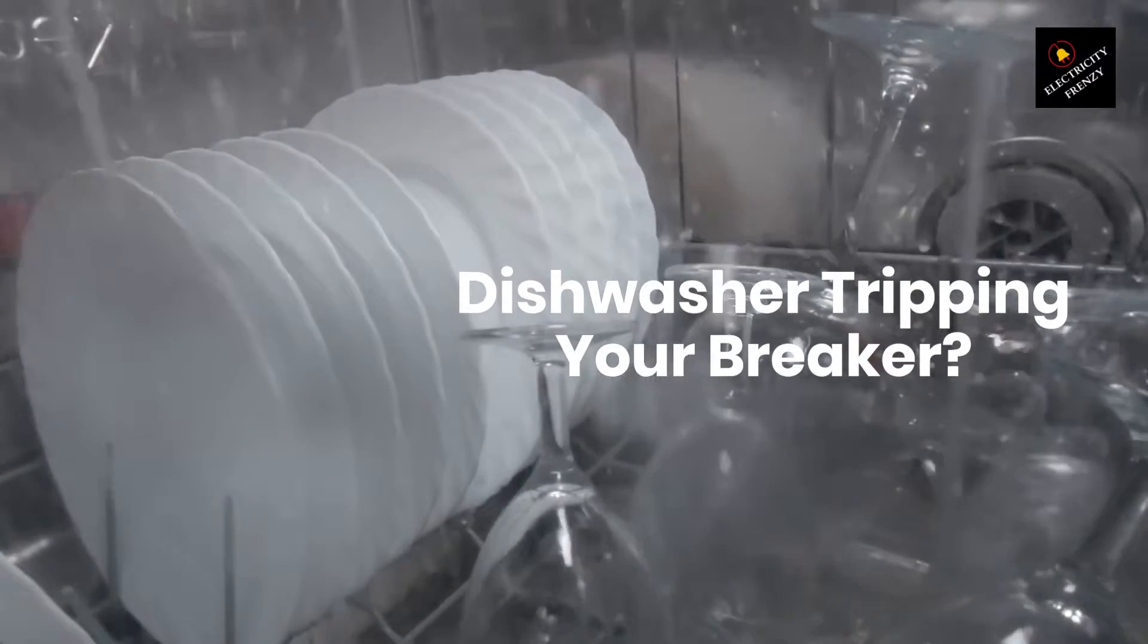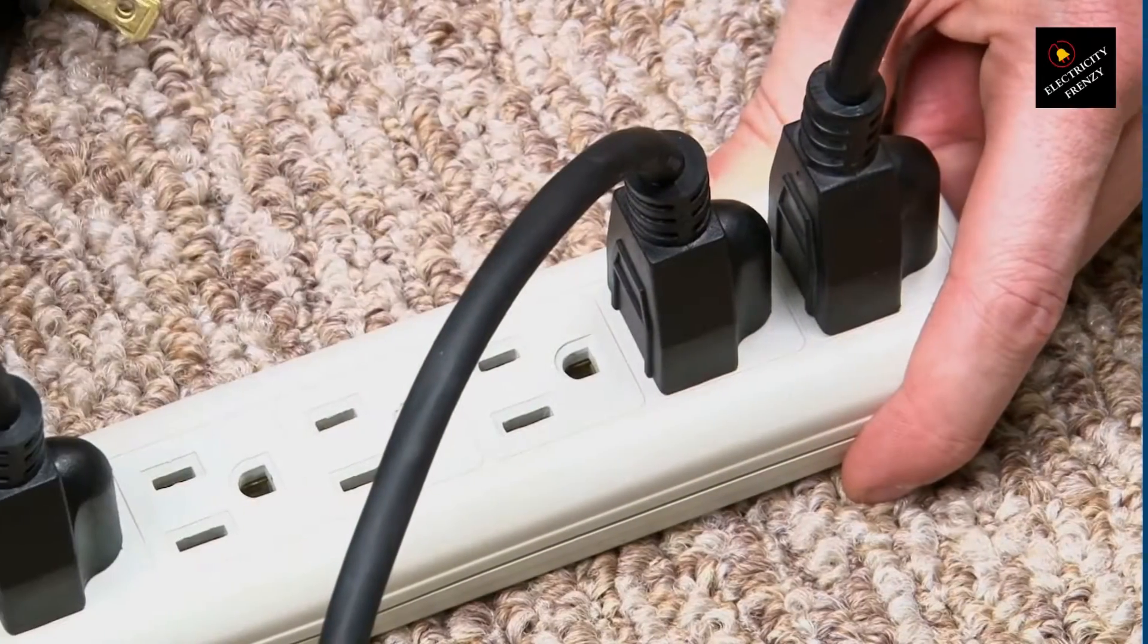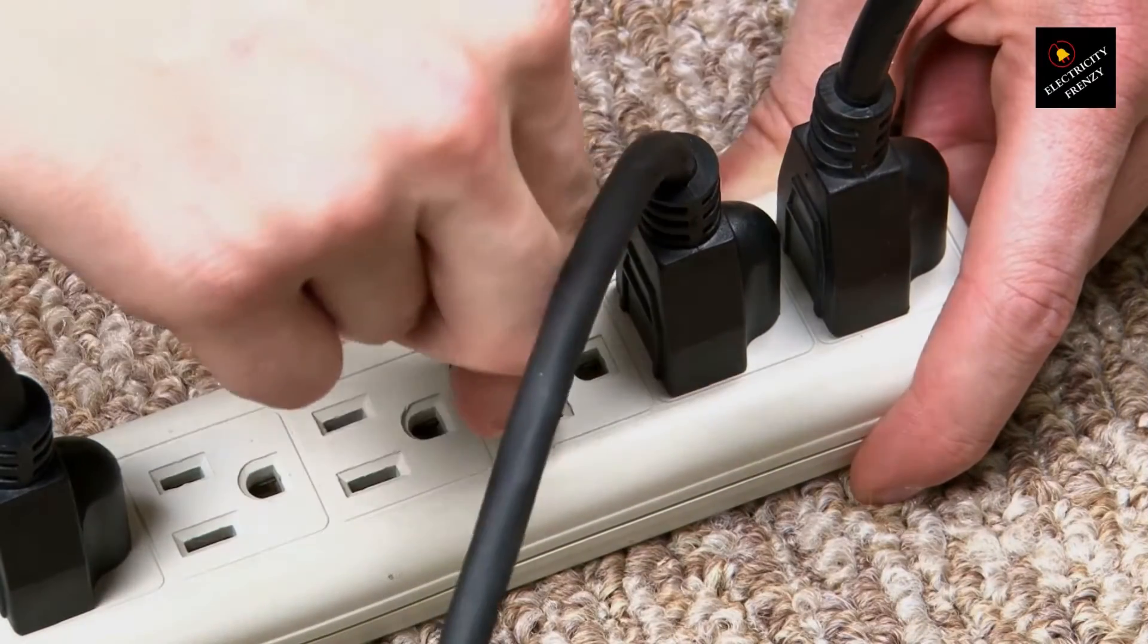First up, your dishwasher might not have the circuit all to itself. It could be sharing that circuit with other appliances, which can overload it and cause the breaker to trip.